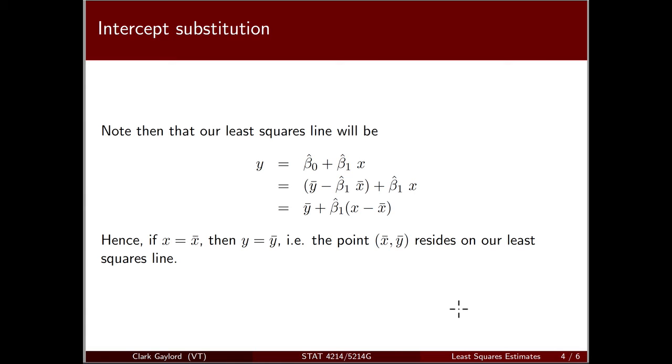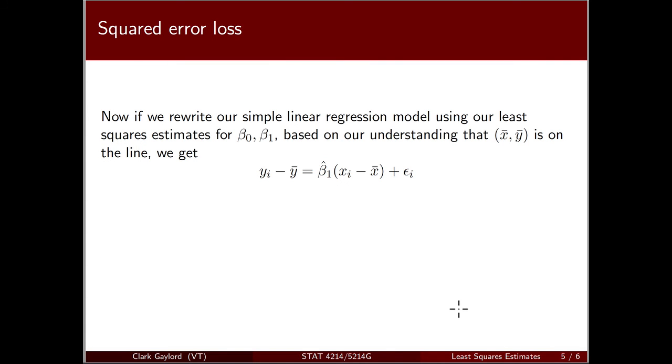From elementary geometry, we remember that a point and a slope uniquely identify a line. Let's rewrite our least squares line with this centered idea. Now the xi's are centered around x bar and yi's are centered around y bar. We have a squared loss function relative to that, so we can focus on just estimating beta1. Slope is now the only unknown.